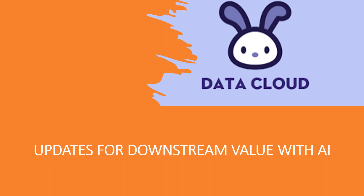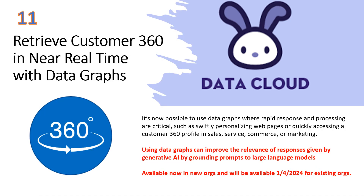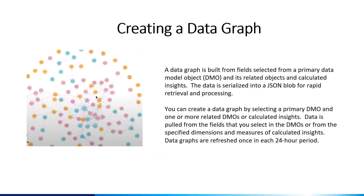There are also a couple of really exciting Data Cloud updates for AI. Data graphs can be used to improve the relevance of responses given by generative AI by grounding prompts to LLMs. In Data Cloud, you can access the Data Graph tab and select a primary data model object in one or more related objects and calculated insights. Once the data is pulled from the fields of the DMOs that you selected, you can use the Data Graph for your LLMs or for other purposes.